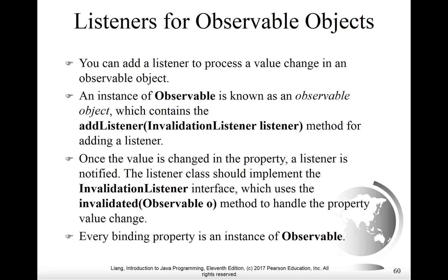Observable objects have properties with values that can change, and when they do it's possible to listen for these changes and then act upon them. We call these listeners for observable objects.